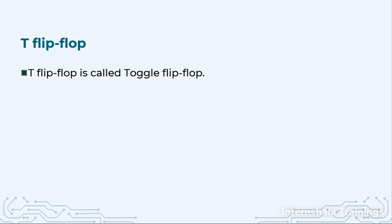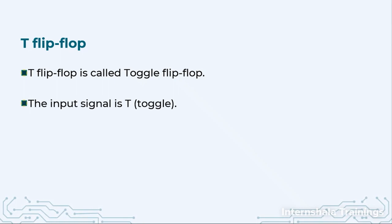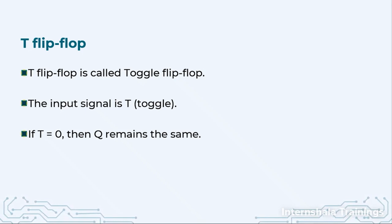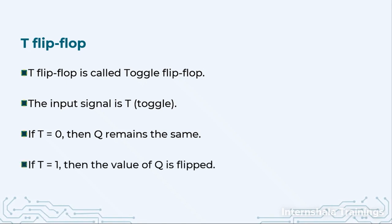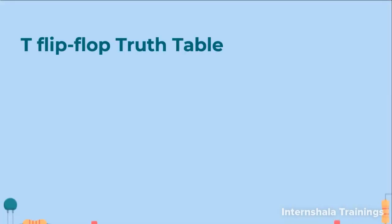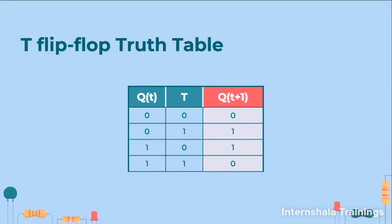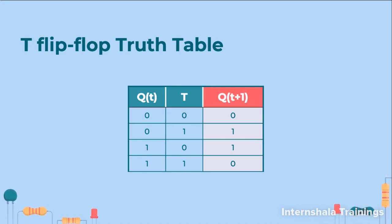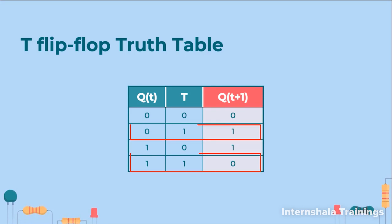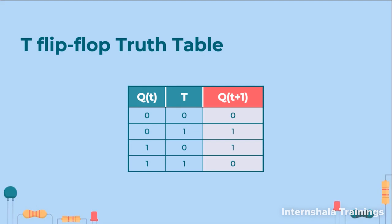In the T flip-flop we are going to toggle the value under some conditions. There is one input called T. If T is 0, we retain the value of Q — whatever Q is, it remains the same. But if T is 1, we flip or toggle the value of Q. In the truth table, whenever T is 0, Q(T+1) equals Q(T), but whenever T is 1, Q(T+1) is the negation or invert of Q(T). That is how a toggle flip-flop operates.